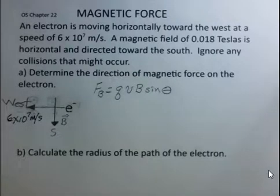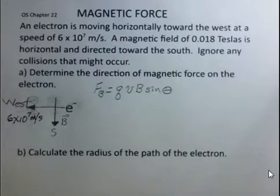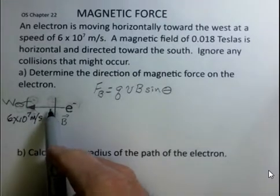But the magnetic force is equal to the charge times the velocity times the magnetic field times the sine of theta. Now, in this situation, the sine of theta will be 1. We're 90 degrees from each other.